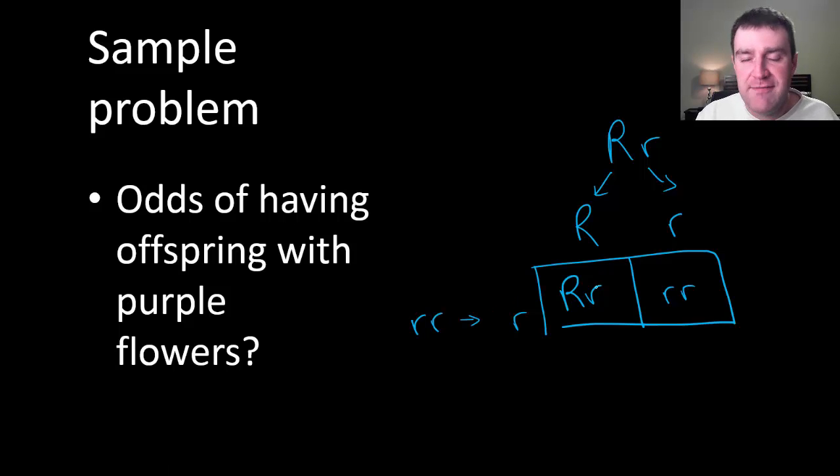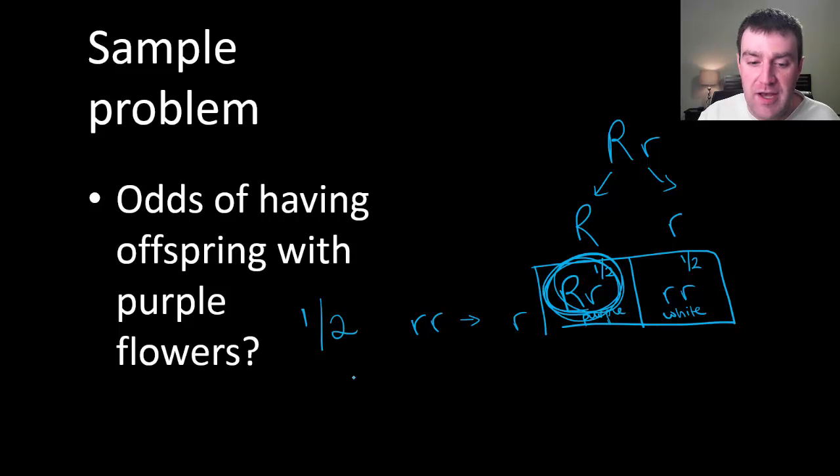It tells us that for each offspring that's produced, each offspring has sort of a one in two chance. There's two possibilities here. And a one in two chance of being purple flowers. That would be this box right here. And there's a one in two chance of it being little r, little r, which would be having white flowers. If you go back to your legend, if need be. So just, you know, to answer any question, you just want to think about all of the possibilities and then how many of them come out the way you want. If we're looking for purple flower potential offspring, that would be this box. So one of the two total boxes, or you could write it as a percentage as well. All of those are fine.